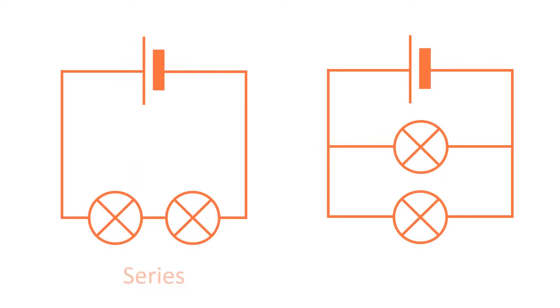There are two ways of joining electrical components, in series and in parallel. In series, the components are connected one after another on the same loop, whilst in parallel the components are connected in separate loops.